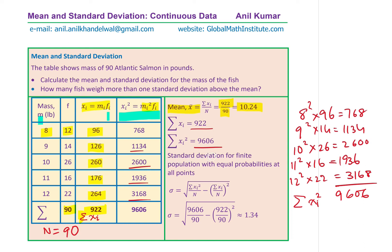The standard deviation for a finite population with equal probabilities at all points is given by: square root of (sigma xi squared over n) minus (sigma xi over n) squared. Substituting our values — sigma xi squared is 9606, sigma xi is 922, and n is 90 — we get the standard deviation as 1.34. So the mean is 10.24 and the standard deviation is 1.34.